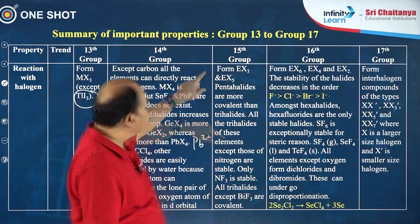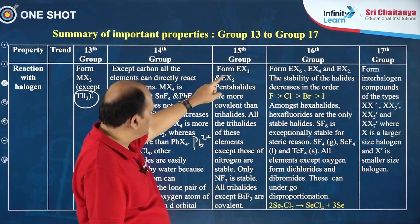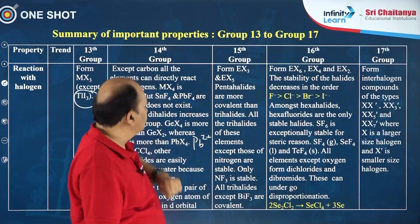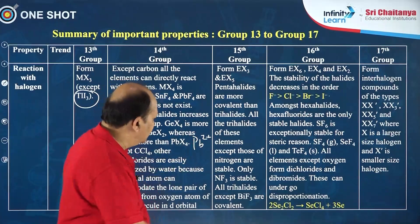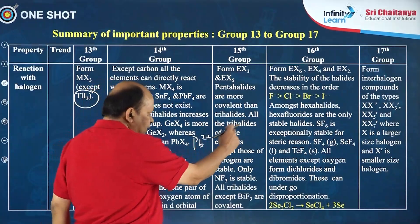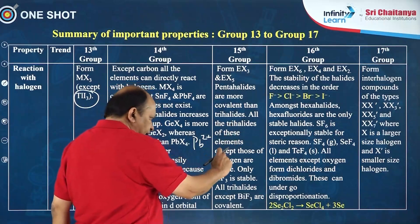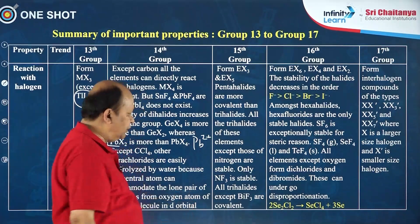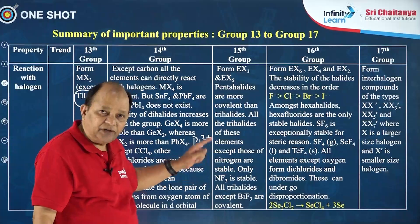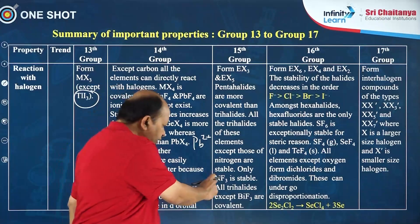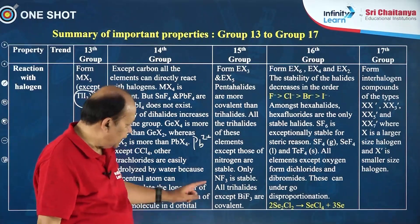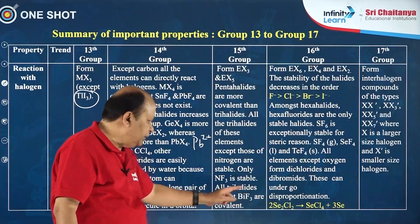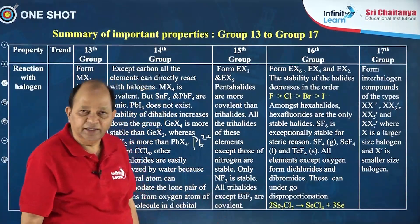Concerning group 15, halides of EX3 and EX5 type are formed. Pentahalides are more covalent than trihalides. All trihalides of these elements, except those of nitrogen, are stable. As far as the trihalides of nitrogen are concerned, only NF3 is stable, and all trihalides except BiF3 are covalent in nature.